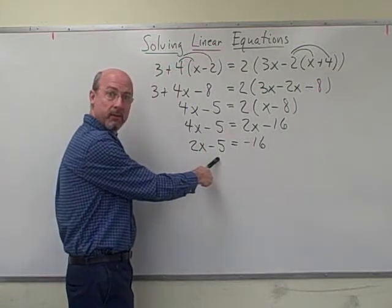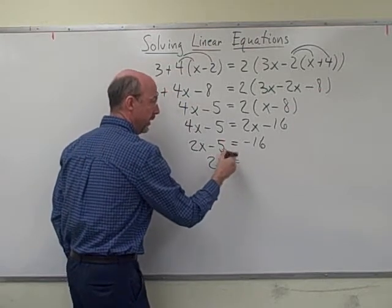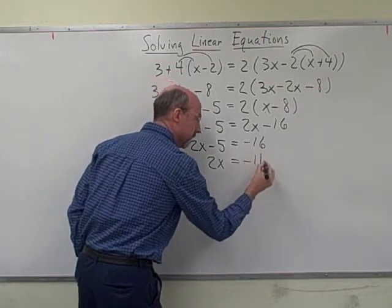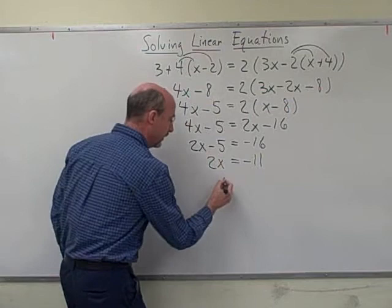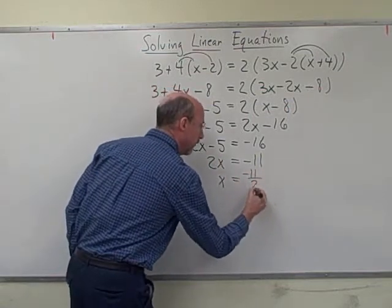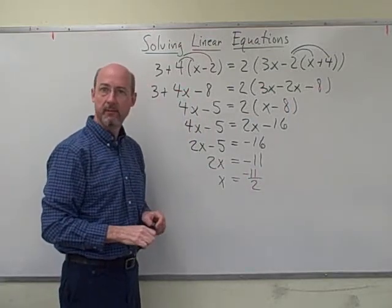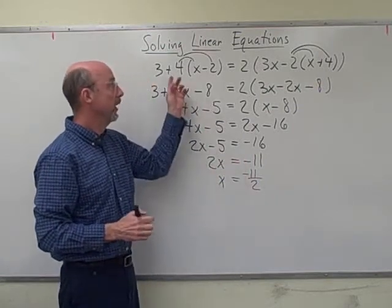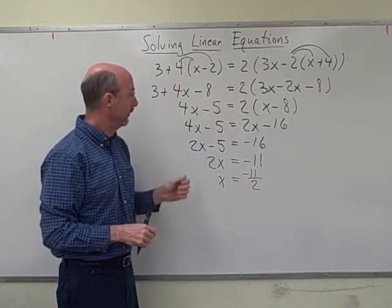Now we'll add 5 to both sides so that only x's appear on the left. And so when I add 5 to the left, it goes away. I add 5 to the right, I get negative 11. And finally, we can isolate the x by dividing both sides by 2. And the 2 will go away from the left and we'll now have negative 11 over 2 on the right. So we've isolated our x. This should be a solution. We could go back and check and make sure that it works. But I think we're okay.